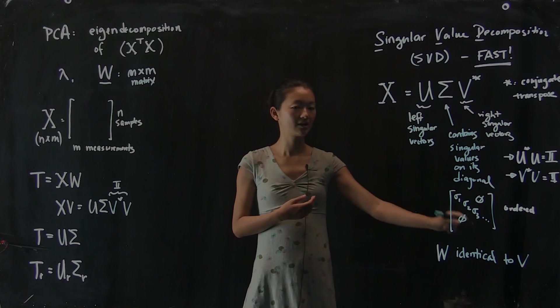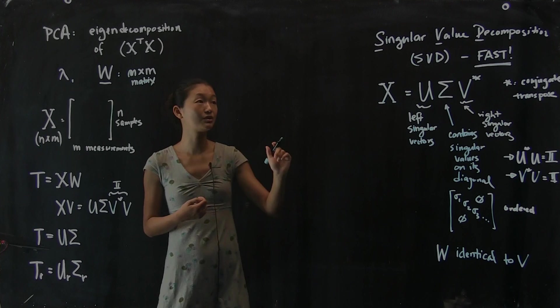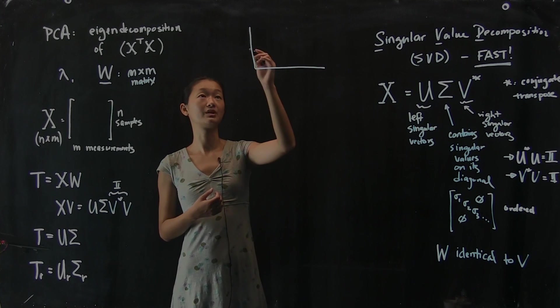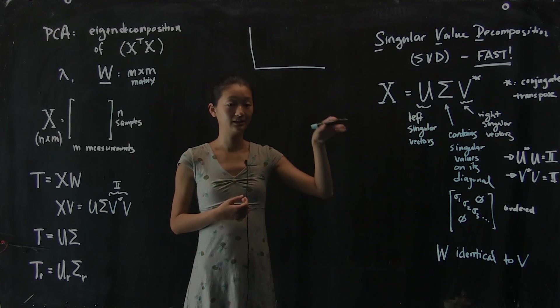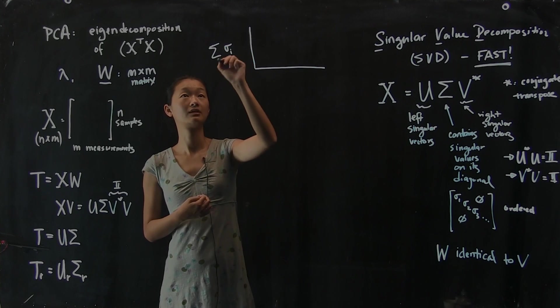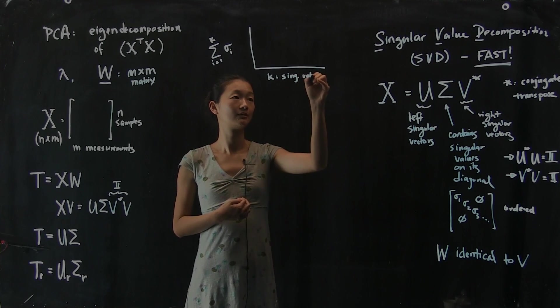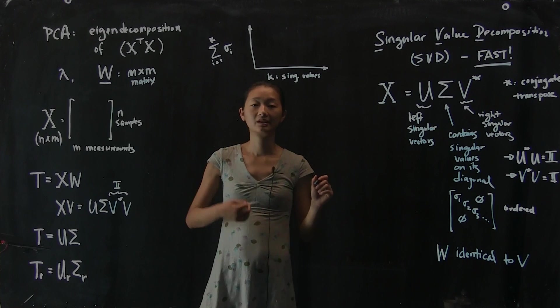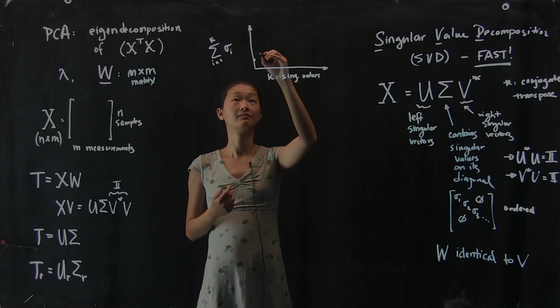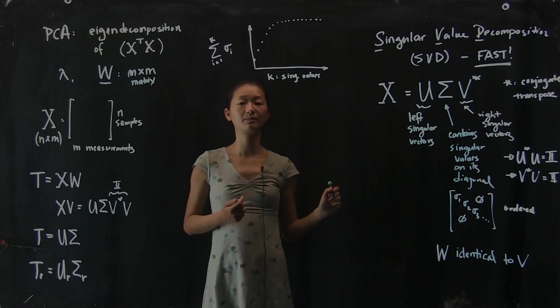So what we're going to do is look at our singular values, these sigmas. Remember, they're ordered, and so they're guaranteed to get smaller as you go down the diagonal. What we're going to do is once we've computed them, we can plot the following plot. What we're going to do is take the cumulative sum of the singular values. So I'm going to take the sum of all of my singular values from 1 to k. So if k equals 1, then this is just the first singular value. We're going to have a number. If k equals 2, then it's going to just be the sum of the first two. We're going to have a number. Then the first three, and the first four, and the first five, and the first six, etc. And you'll end up with a plot that looks something like that.